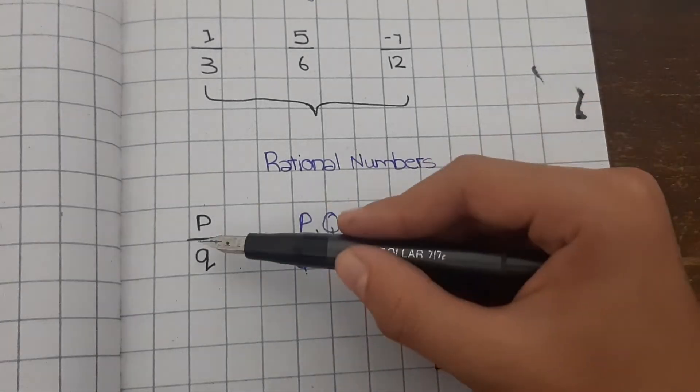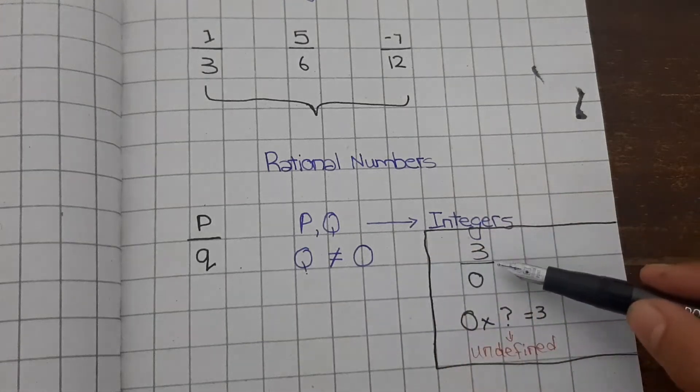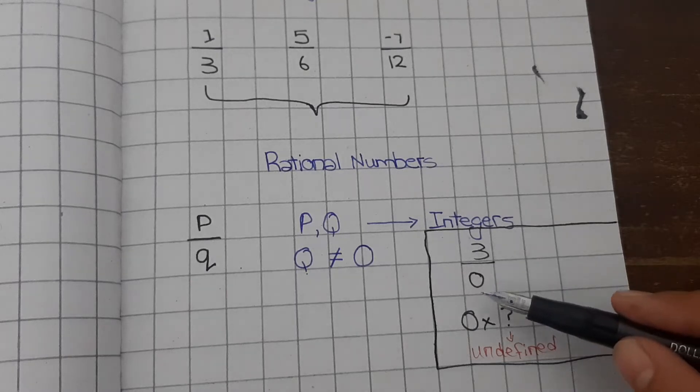Because, for example, this is the numerator and this is the denominator. Now in the place of Q I write 3, and if I write zero in the place of Q, then...